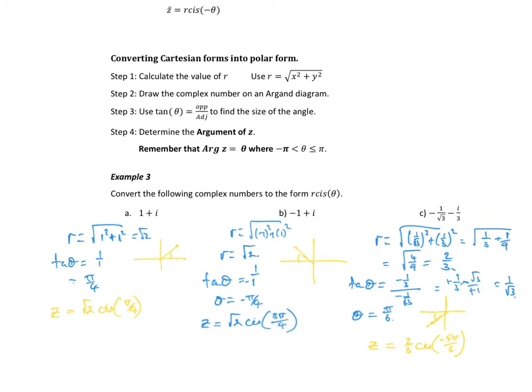If we want to convert these complex numbers into polar form, we work out the magnitude of R and the angle.